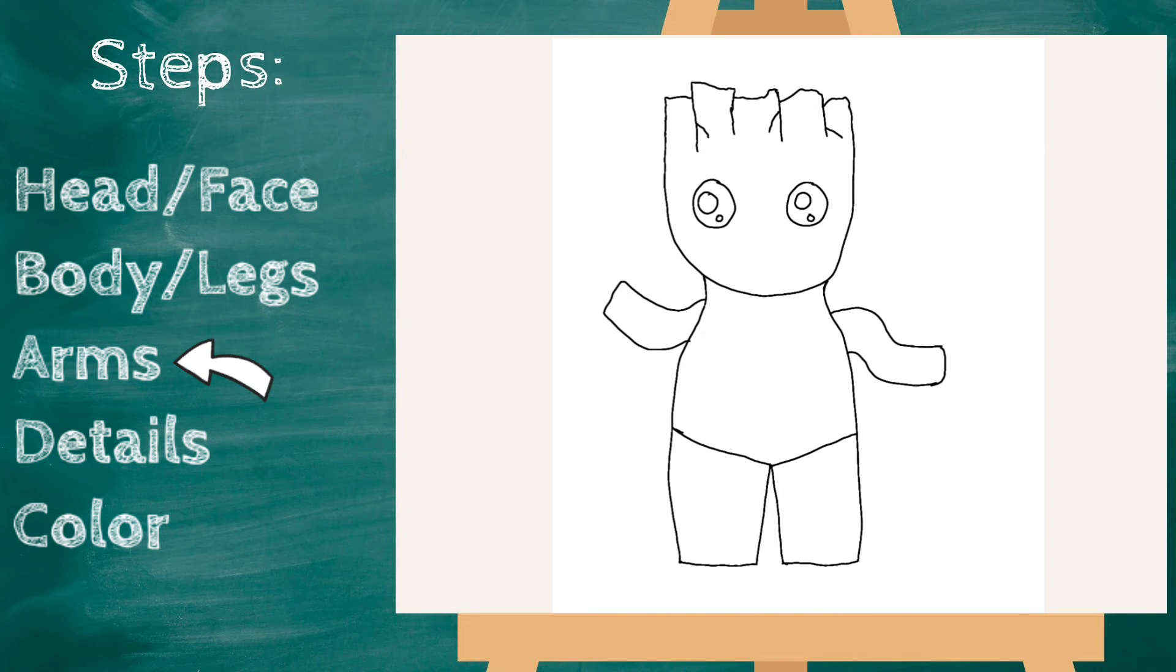Alright, now let's give him some details. Let's go back up and give him a little mouth. And we can go back into his arms and draw just little lines - they can go in any direction. It looks best if they're connected, kind of like a puzzle piece. This will make him look like he's got bark.